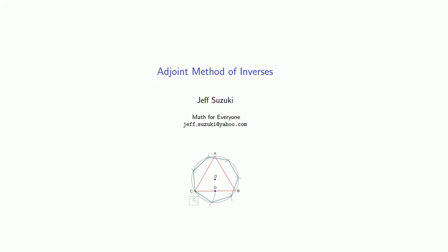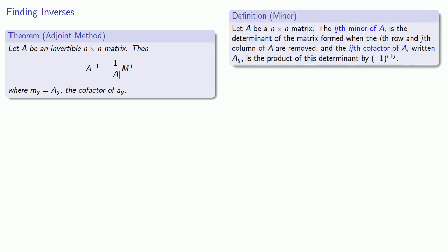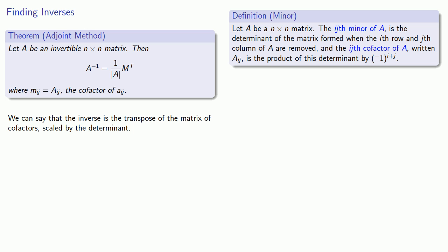Another method of finding the inverse of a matrix is known as the adjoint method. The adjoint method is based on the following theorem: let A be an invertible n by n matrix. Then the inverse of A is 1 over the determinant times the transpose of some matrix M, where the components of M are the cofactors of the original matrix. We might say that the inverse is the transpose of the matrix of cofactors scaled by the determinant.